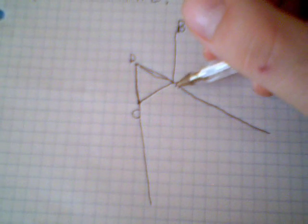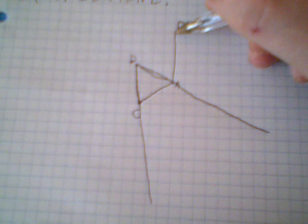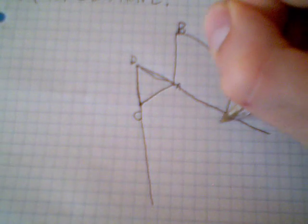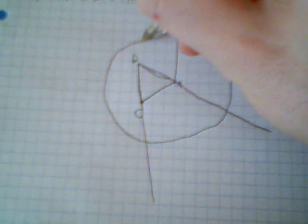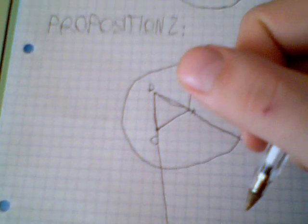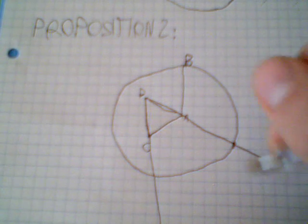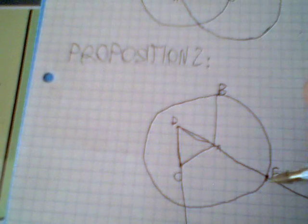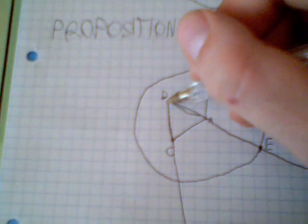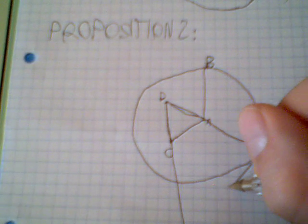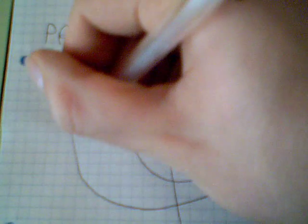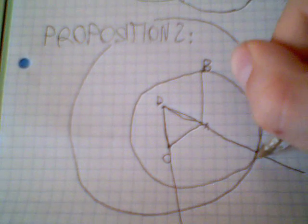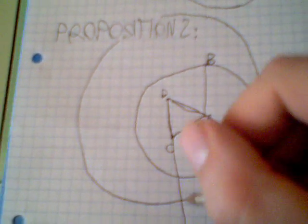I take AB as a radius and A as a center and draw a circle. Then I take D as a radius and D as a center and I draw another circle, and I will get another point F.